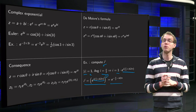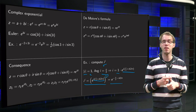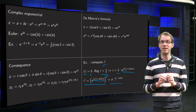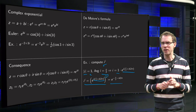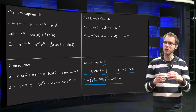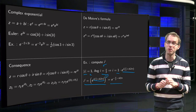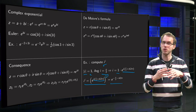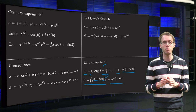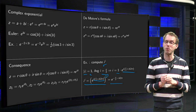So this funny-looking i to the power i first of all turns out to be a real number, and moreover it gives infinitely many real values. That's because we're dealing with complex numbers — you'll see this property more often. This shows how to compute complex exponentials and use them for all kinds of problems.